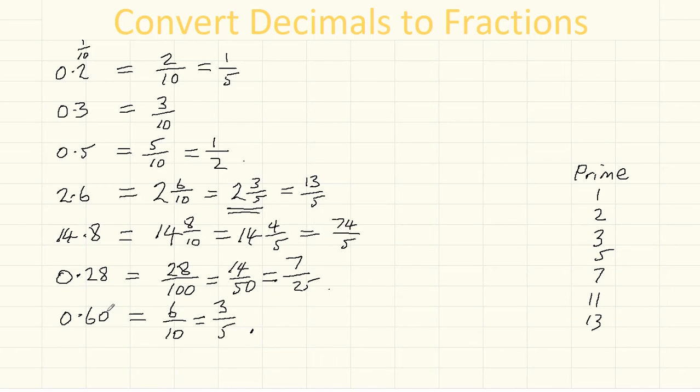Alternatively, we could say actually this is our hundredths column, so we've actually got 60 hundredths. This is exactly the same thing, because we're then just going to divide by 10, and then divide by 2.